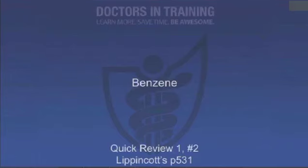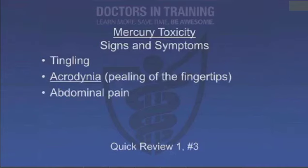The halogenated hydrocarbon associated with acute myelogenous leukemia is benzene — benzene goes along with AML. Signs and symptoms of mercury toxicity include tingling, acrodynia (peeling of the fingertips), and abdominal pain — a nonspecific but common symptom.